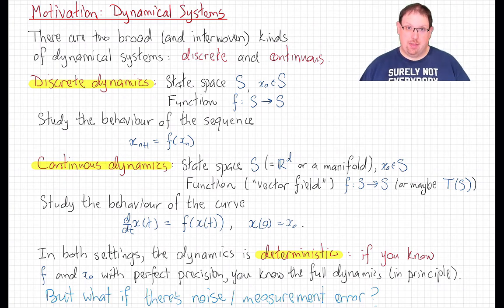And then there are continuous dynamical systems, which have some similar constructs and some that might look a little bit different. If we have a state space S here, in this case usually that state space is going to be Euclidean space, or an open set in Euclidean space, or perhaps more generally a manifold.